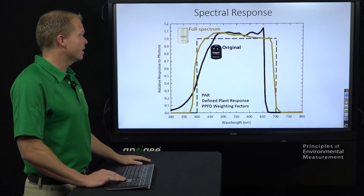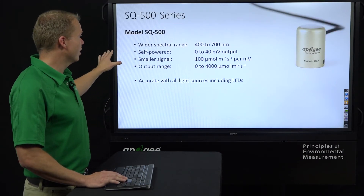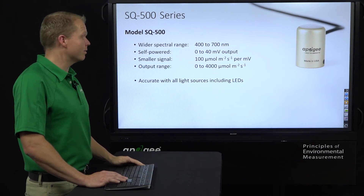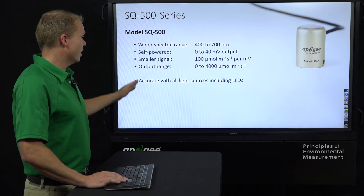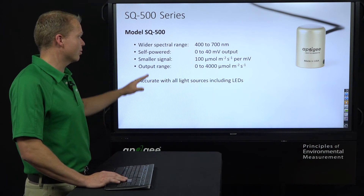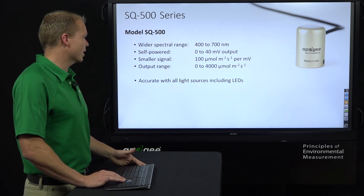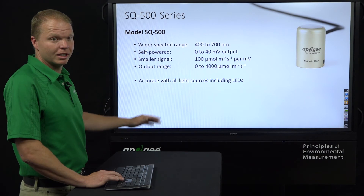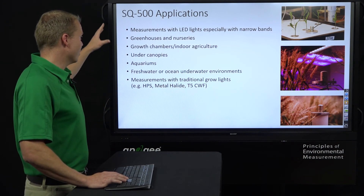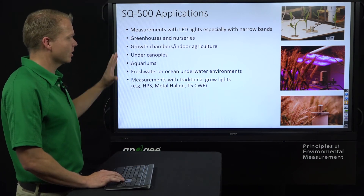Now for the full spectrum: the SQ500 series. We have one sensor in this series, the SQ500, which has a wider spectral range. The signal is much smaller — only 0 to 40 millivolts — so that works out to 100 micromoles per meter squared per second per millivolt. Make sure your data logger can read that small signal. The output range is the same: 0 to 4,000 micromoles per meter squared per second. It's accurate with all light sources, including all LEDs, even narrow bands, giving you accurate PAR readings.